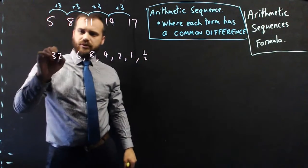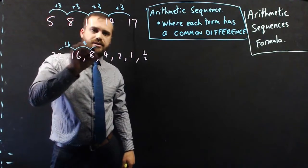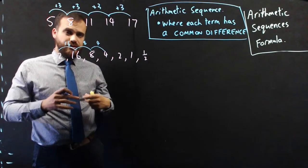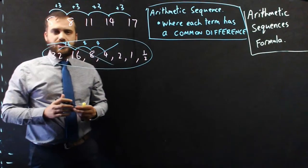Now, this one, 32 to 16, there's a 16 difference. This one, there's an 8. This one, there's a 4. The differences between each term are different. So, this is not an arithmetic sequence.